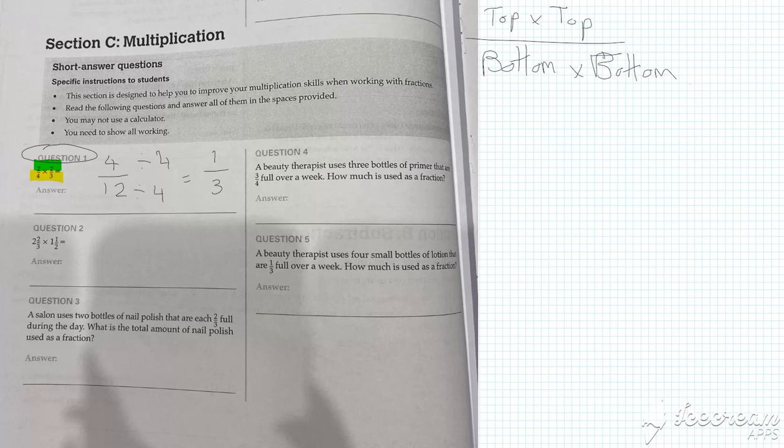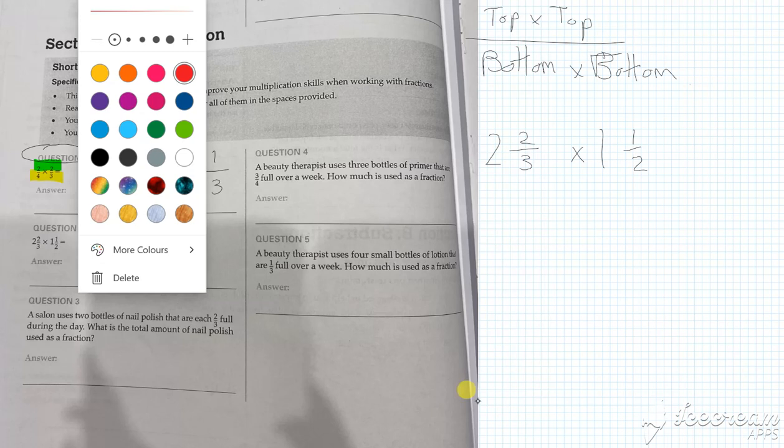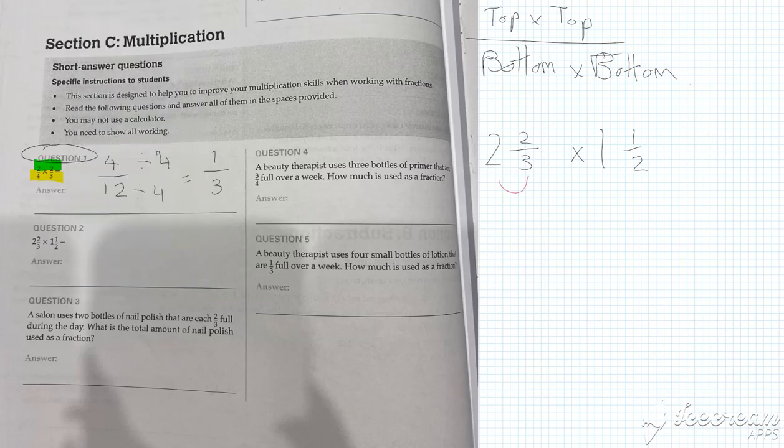Now for question 2, we just have to remember we have to change the mixed numbers before we do anything. So when we look at this sum, what you might remember is that little circle that we do. So we go bottom number and then around, so we times and then add.